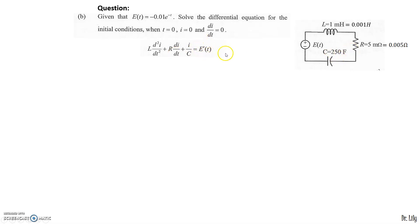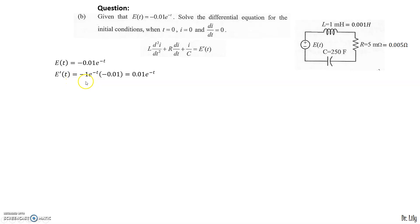For the value of E'(t): since E(t) = −0.01e^(−t), we differentiate it to get E'(t). Differentiating e^(−t) gives −1·e^(−t), so multiplying by −0.01 gives E'(t) = 0.01e^(−t). Now we have all values of L, R, C, and E'(t) to substitute accordingly.